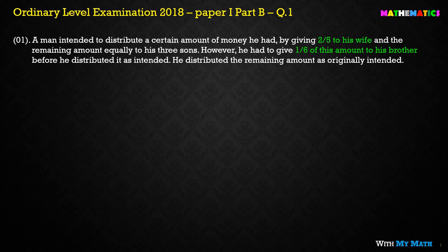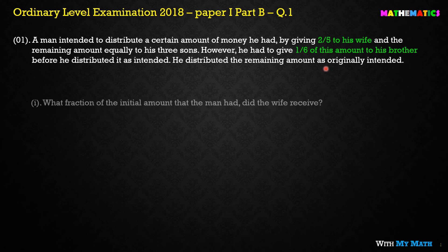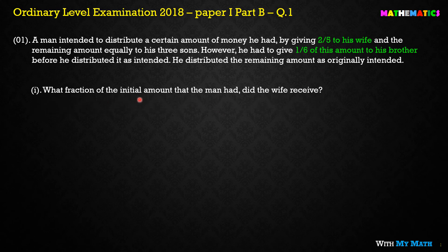Now let's move to the question. A man intended to distribute a certain amount of money he had by giving 2/5 to his wife and the remaining amount equally to his three sons — so already four persons. However, he had to give 1/6 portion of this amount to his brother before he distributed as intended. He then distributed the remaining amount as originally intended. We are asked: what fraction of the initial amount did the wife receive?